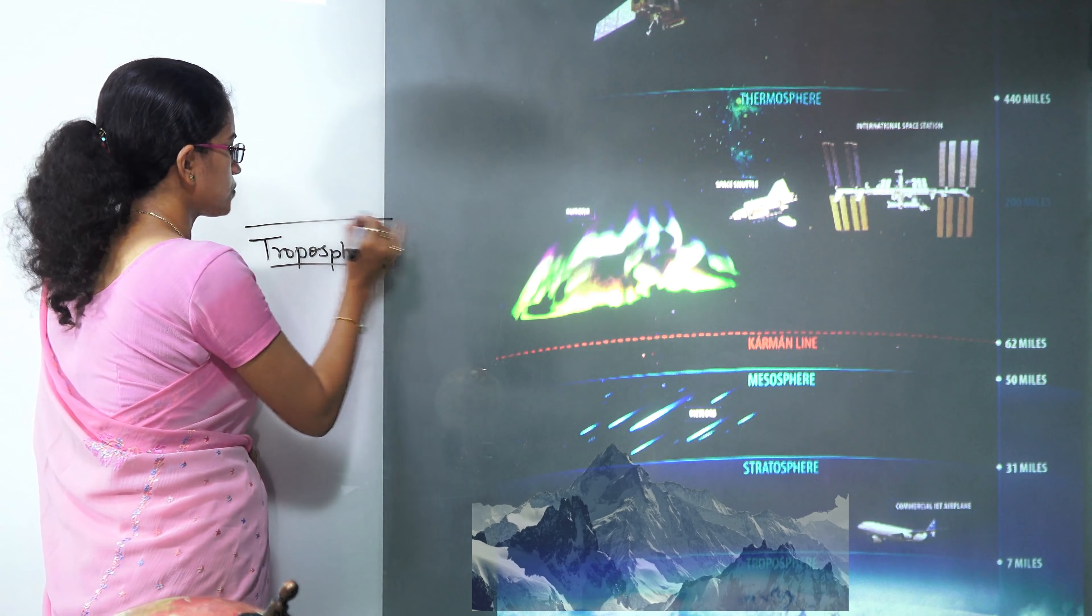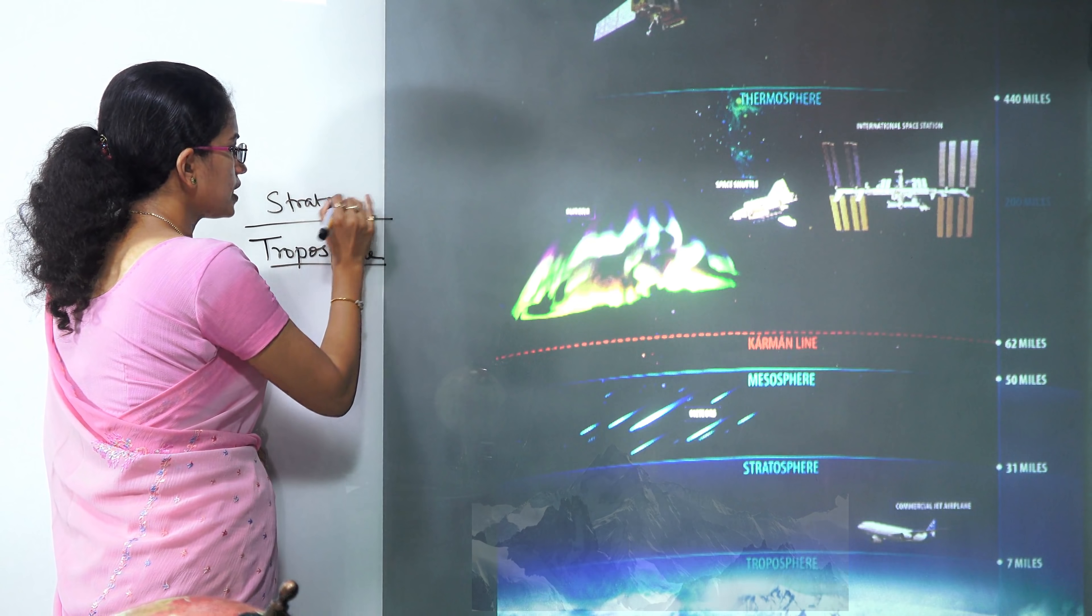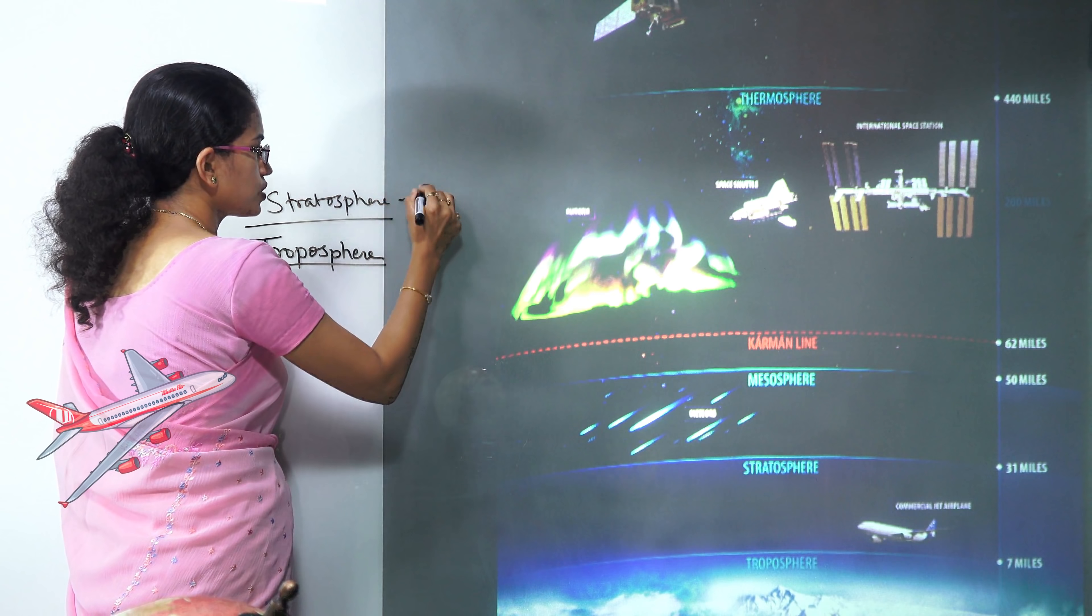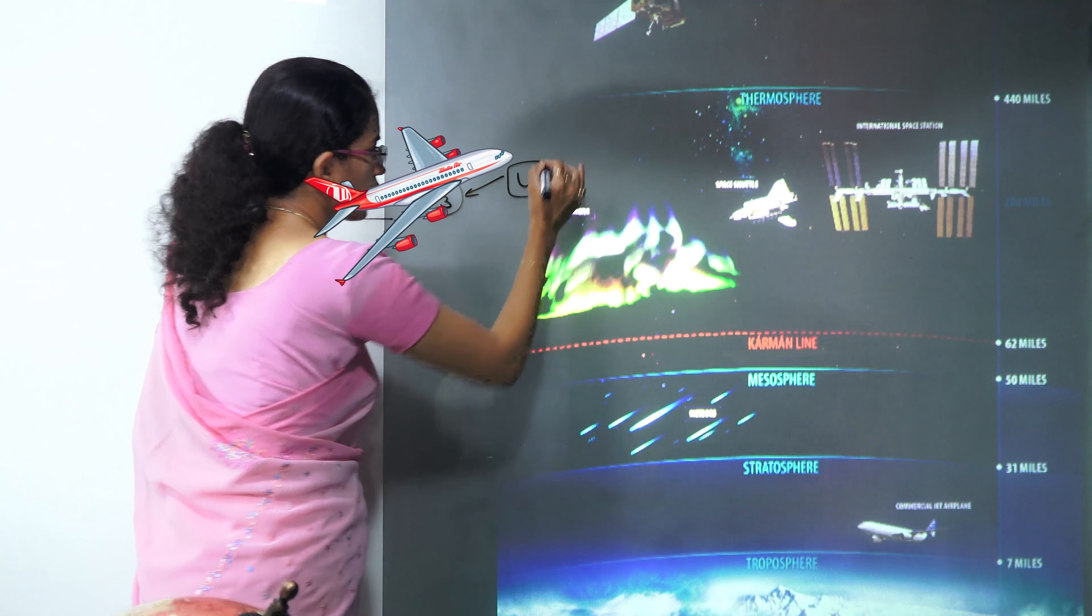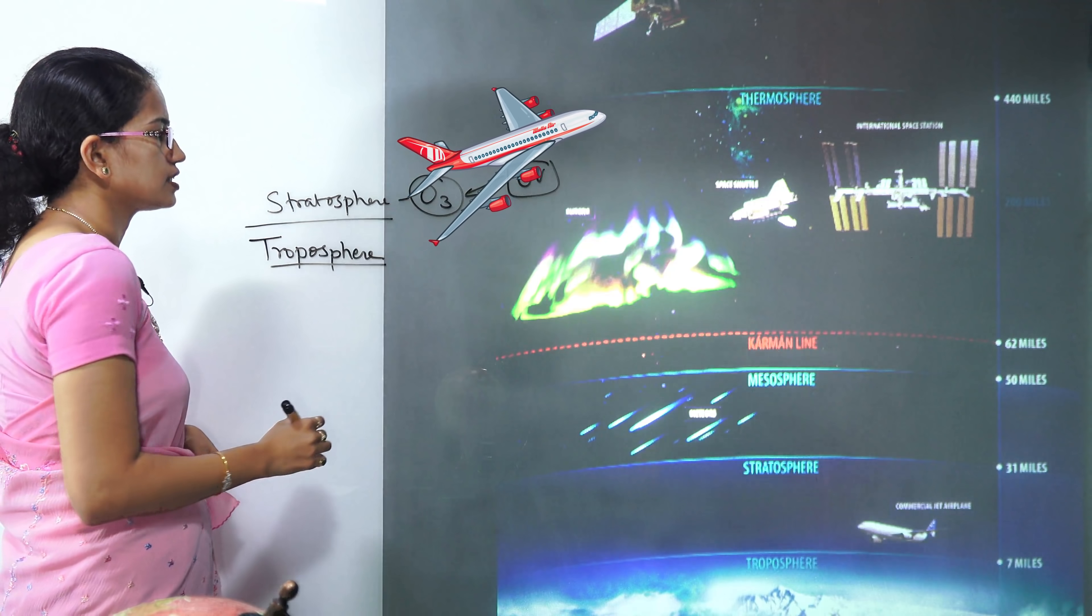Above the troposphere you have the stratosphere. Stratosphere is the layer where you have the ozone that is present. Now ozone basically prevents the harmful ultraviolet rays from reaching the earth's surface.